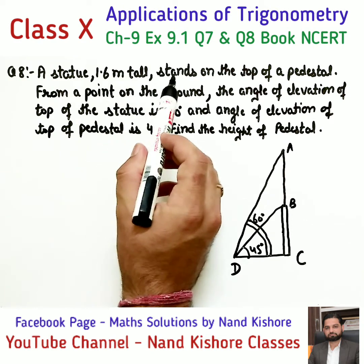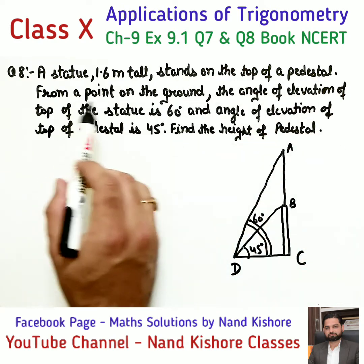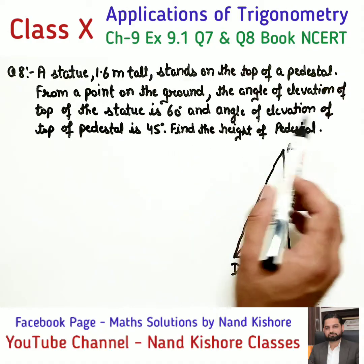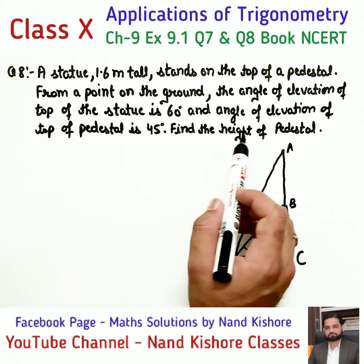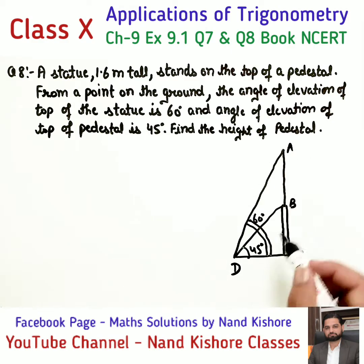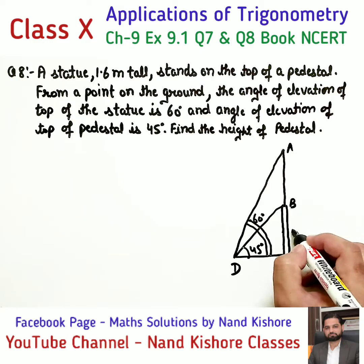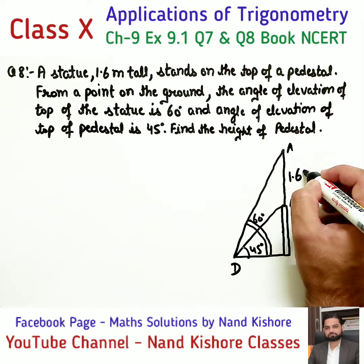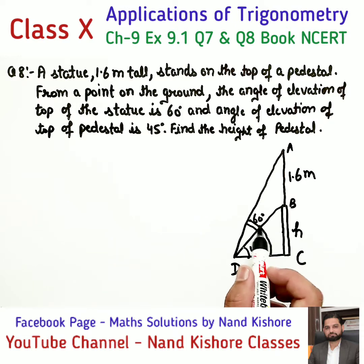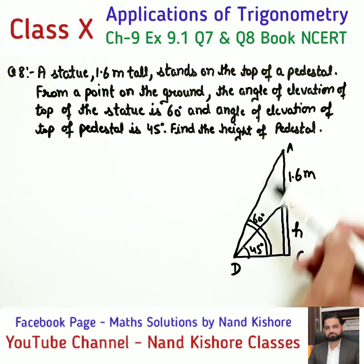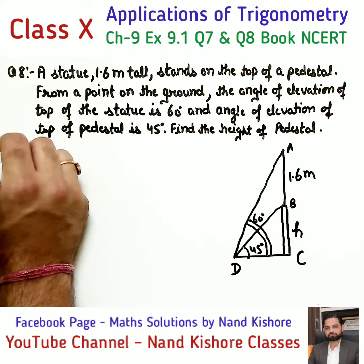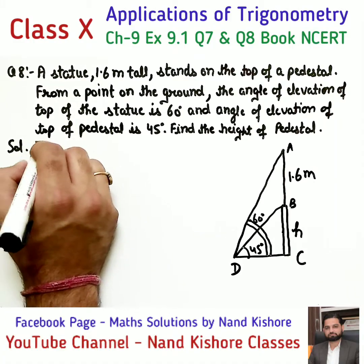Question 8: A statue 1.6 meters tall stands on the top of a pedestal. From a point on the ground, the angle of elevation of the top of the statue is 60 degrees, and angle of elevation of the top of the pedestal is 45 degrees. Find the height of the pedestal. The diagram is exactly the same. BC is the pedestal with height H, AB is the statue with height 1.6m, angles are the same 45 and 60 degrees.